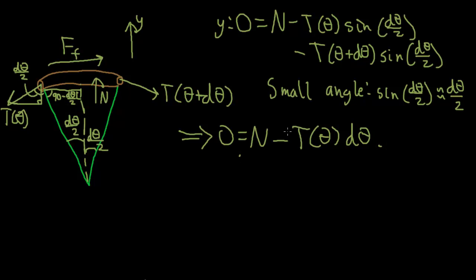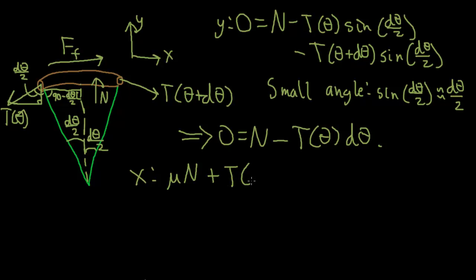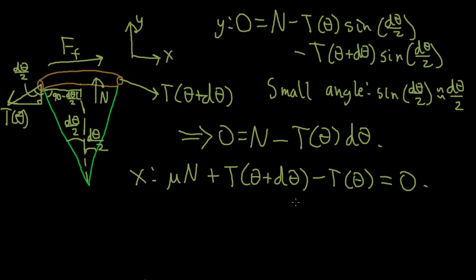Now let's consider the forces in the x-direction. The friction force at its maximum is μ times the normal force, acting in the positive x-direction. So in the positive x-direction we have: friction force μN, plus T(θ + dθ) times cosine(dθ/2) — but by the small angle approximation cosine of a small angle is roughly 1, so just T(θ + dθ) — minus T(θ), because T(θ) pulls in the minus x-direction, also times cosine(dθ/2) ≈ 1. This is our equilibrium equation in the x-direction.